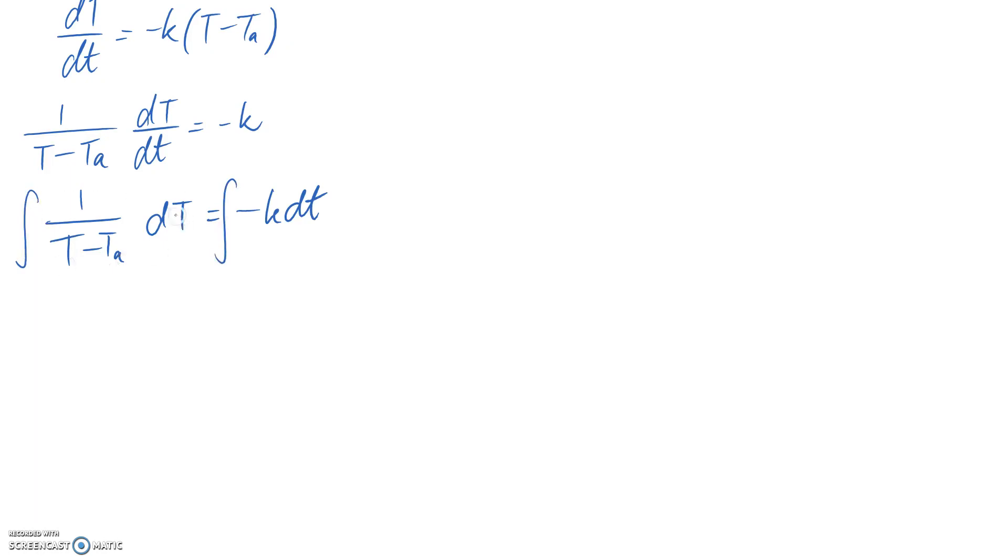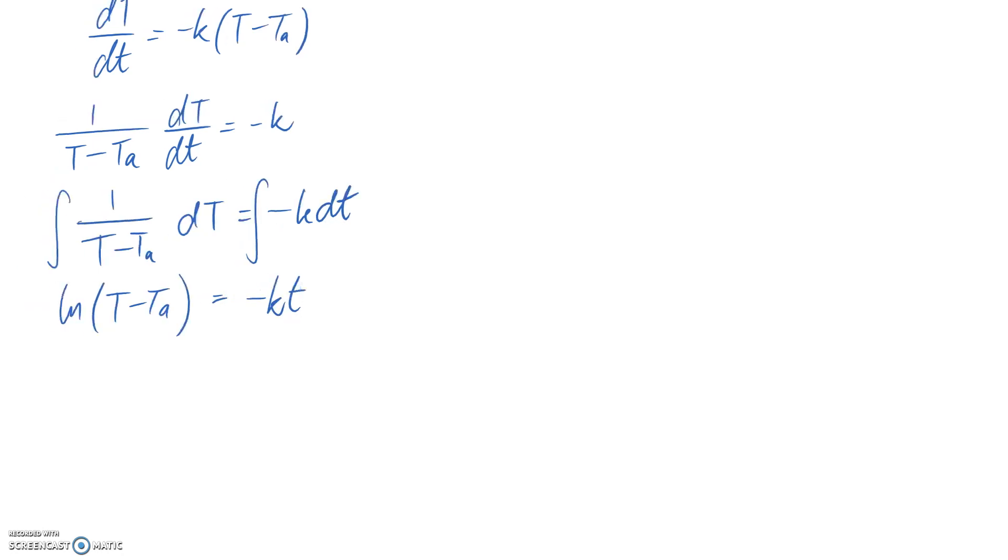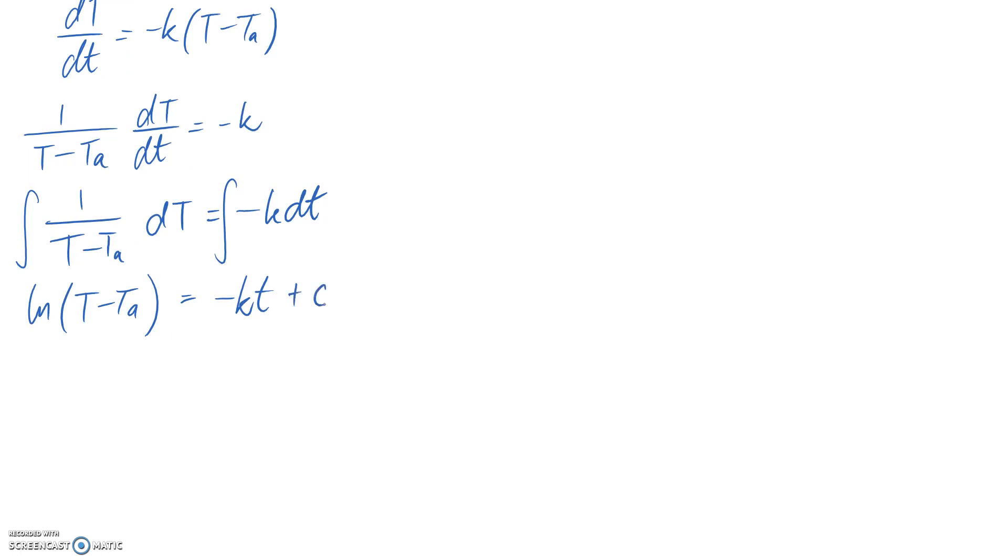When I integrate this with respect to my big T, remember that this TA is just a constant or a number. So when we integrate, we're going to go from this to the log of what's on the bottom line. And on the right-hand side, we want to integrate negative k with respect to little t. So this is going to become negative kt, and because we've done indefinite integrals, we need to have our little plus c appearing on the end.